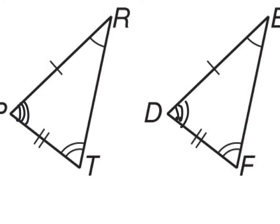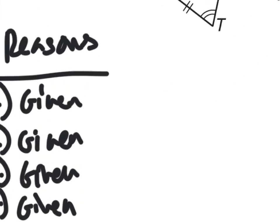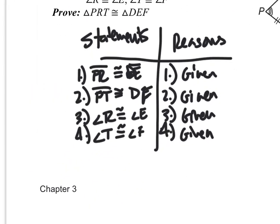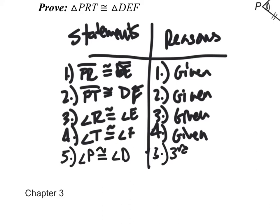What the third angles theorem says, if you remember, is that if two corresponding angles of two different triangles are congruent, then we know that their third angles have to be congruent — the third pair of angles have to be congruent. So my fifth statement is that angle P is congruent to angle D, and that's by the third angles theorem.